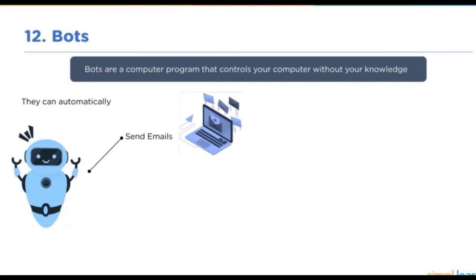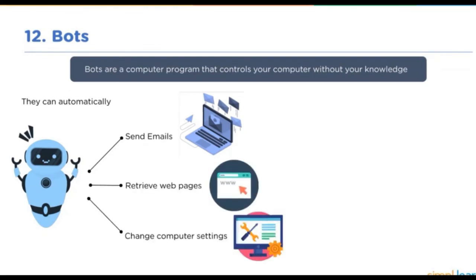Botnets can be used to automatically send spam emails, retrieve web pages, change computer settings, or perform any other malicious activity. Botnets are possible because most computers around the world are accessible over the internet, and many of those computers have weak security. The best defense against the botnet is to keep your systems patched and hardened.